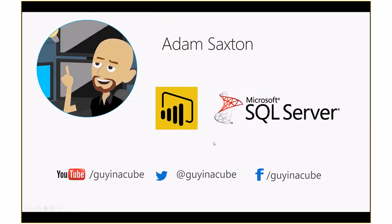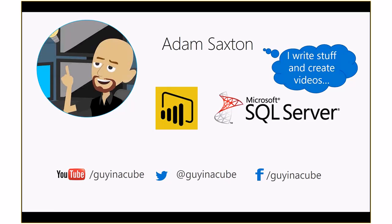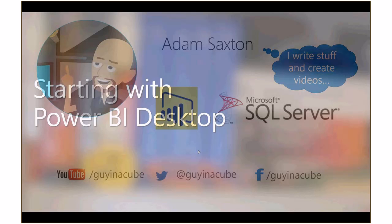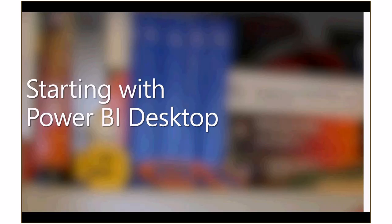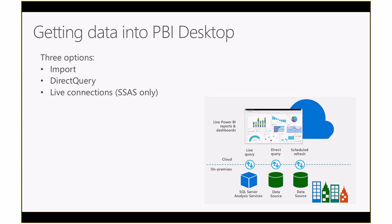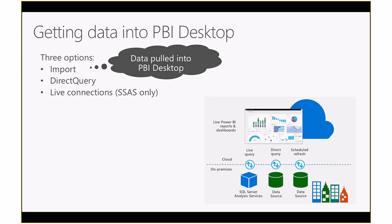I'm going to skip the bio since we already talked about me. Basically, I write documentation and create videos — that's what a senior content developer does. So when we talk about the gateway, we need to take a step back and start with Power BI Desktop, because there are choices we make when working with data in Power BI that we have to make upfront before we ever get to the gateway. Specifically, how do we get data into Power BI Desktop? There are three ways: we can import the data — pulling a copy of that data into Power BI Desktop itself.